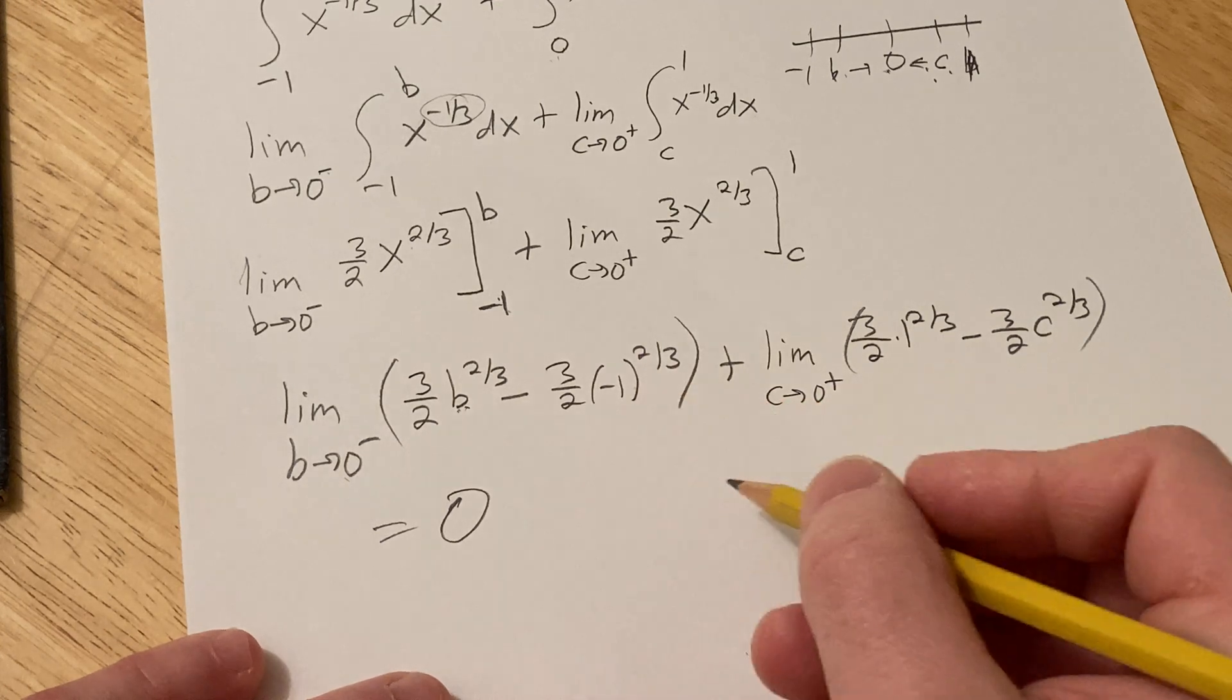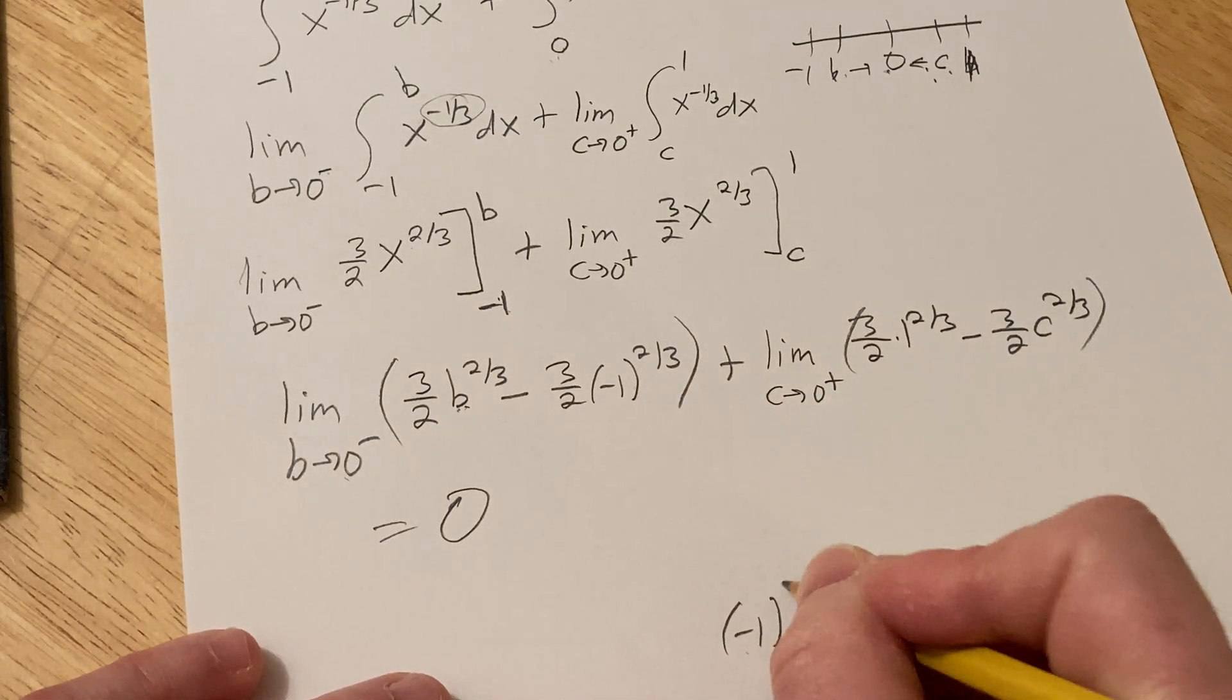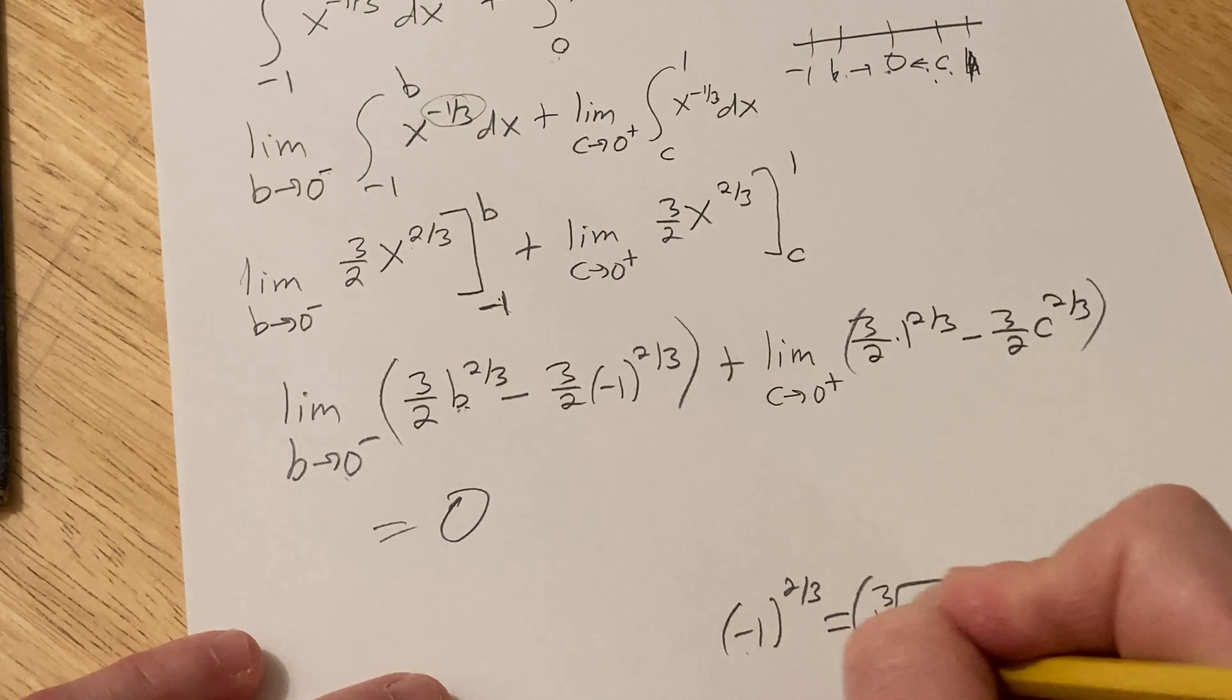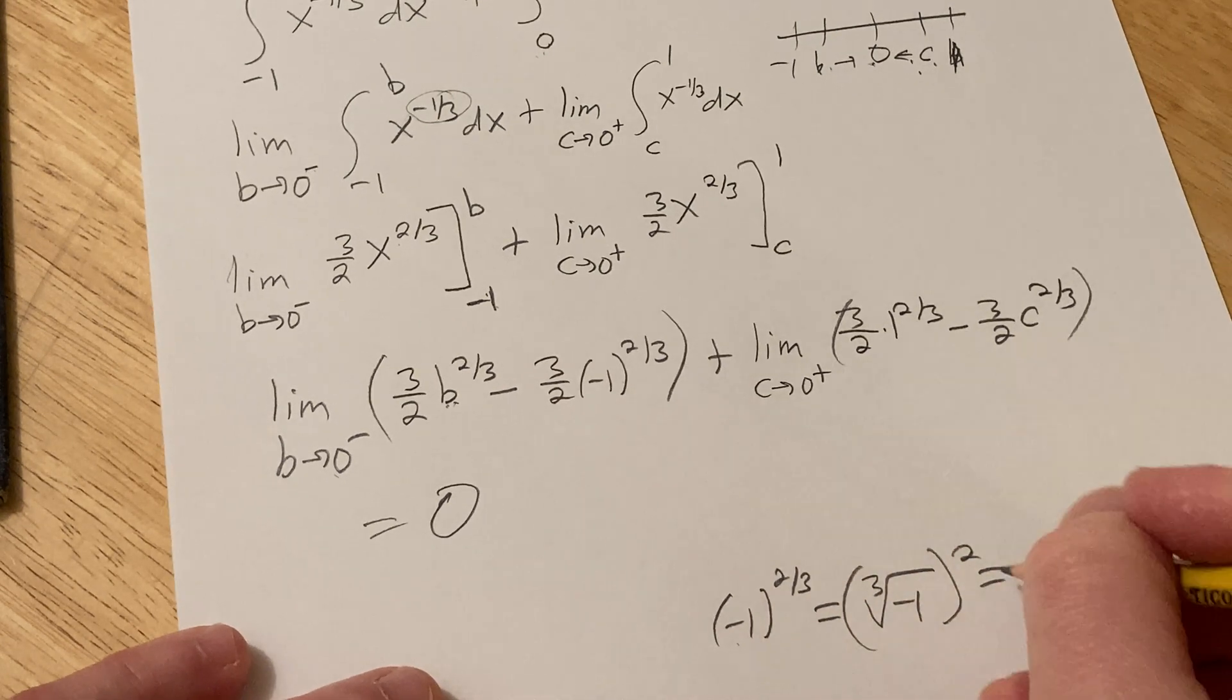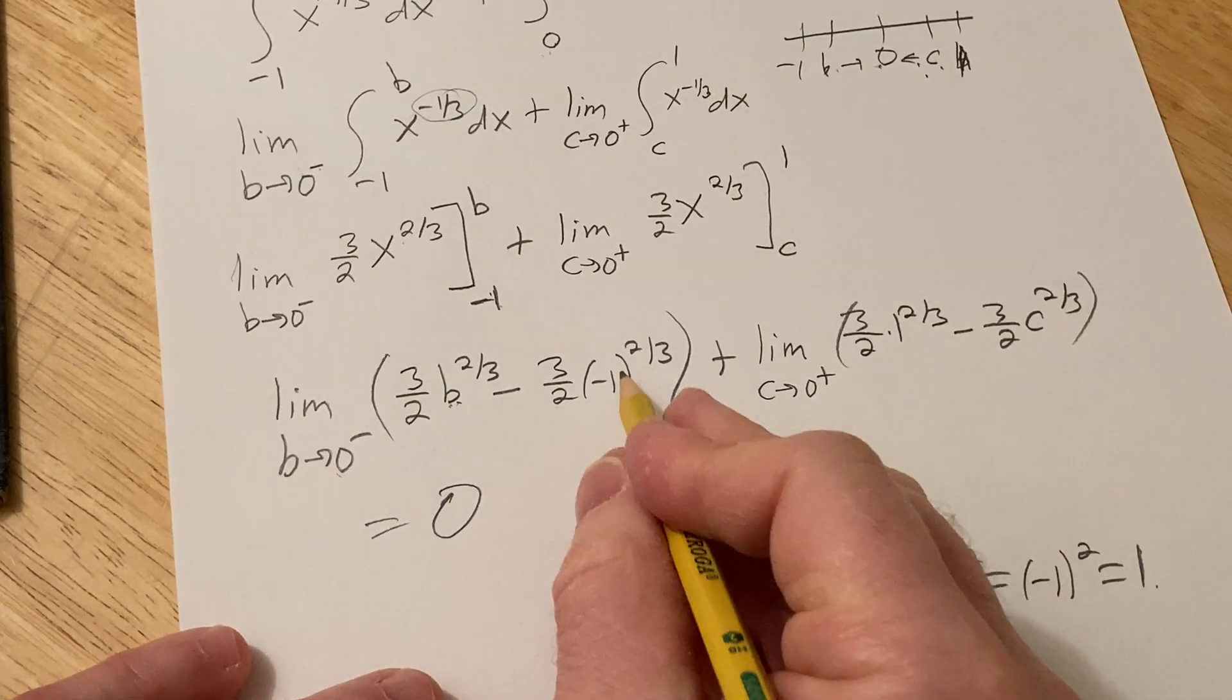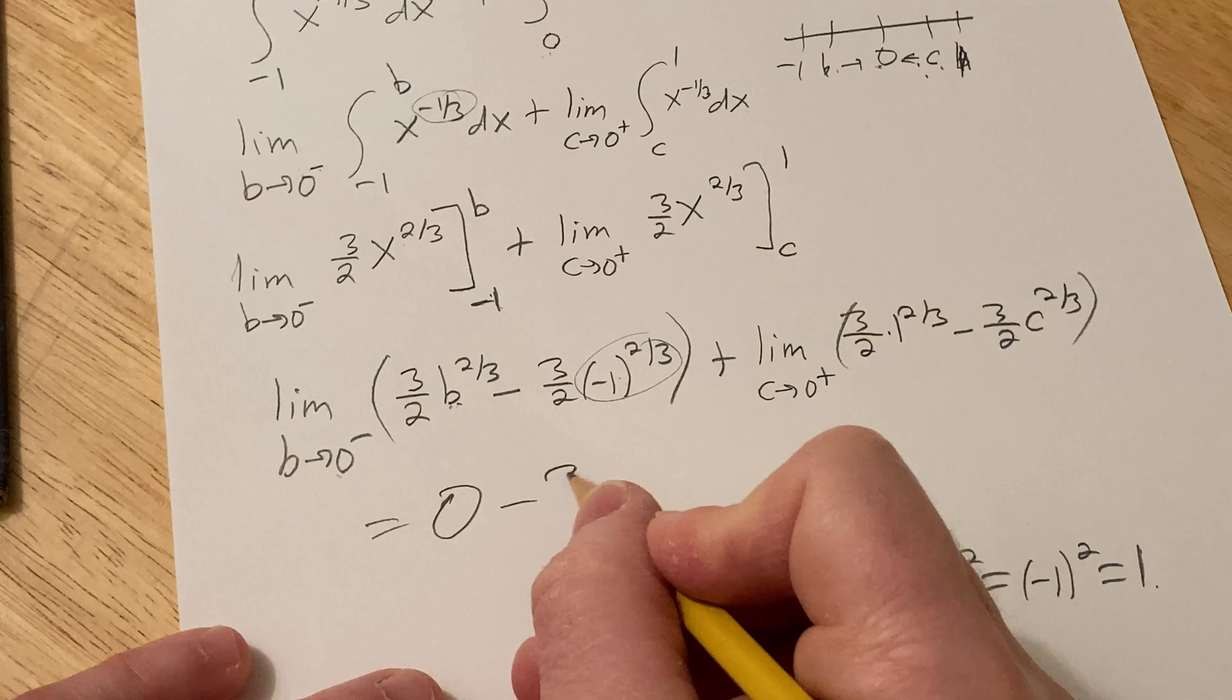Negative one to the two-thirds is the cube root of negative one, quantity squared. The cube root of negative one is negative one, so you get negative one squared, which is one. So this is a positive one, we get minus three-halves.